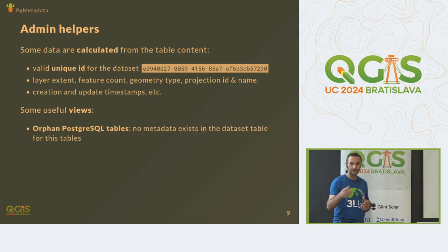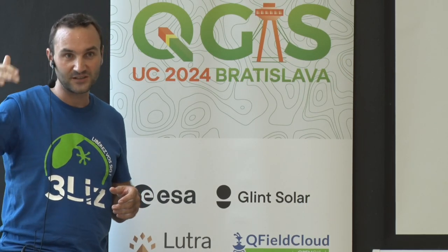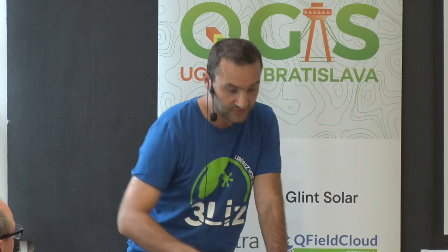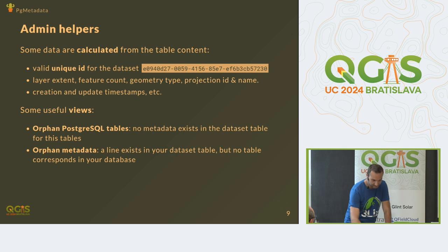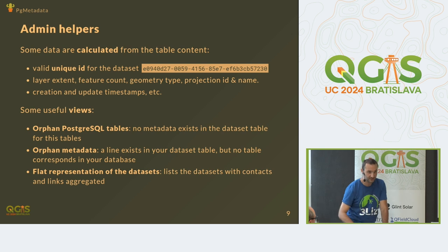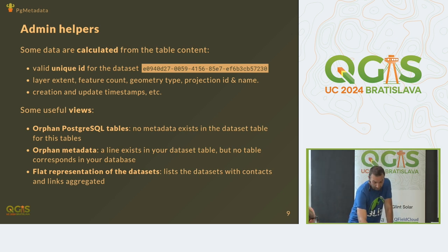We also provide some useful views for the GIS administrator. For instance, orphan PostgreSQL tables: if you created a new table for trees in your database, the view will detect and show you that this table doesn't have a metadata entry in the PG Metadata schema. And we have the reverse as well — orphan metadata — meaning you added metadata about a trees layer, then deleted the layer, but the metadata still exists. We also have a flat representation of the datasets, since a dataset can have one or many contacts with a role like custodian, publisher, etc., or one or many links — useful for CSV export.